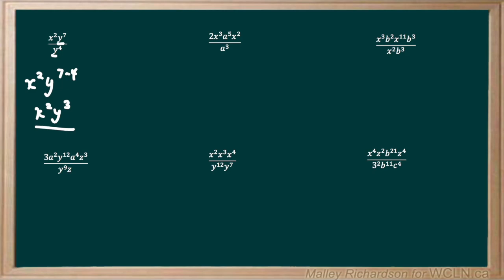Our second example: we have 2 times x to the power of 3 times a to the power of 5 times x to the power of 2, all over a to the power of 3. The two x's have the same base and the two a's have the same base. The 2 stays the same. For x it's multiplication so we add the exponents; for a it's division so we subtract the exponents. We're left with 2 times x to the power of 5 times a to the power of 2 as our final answer.